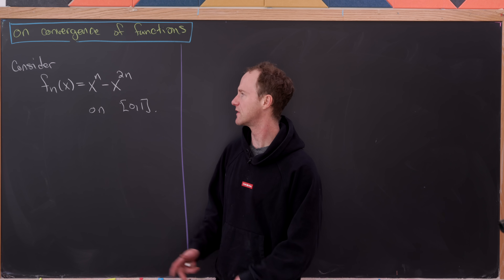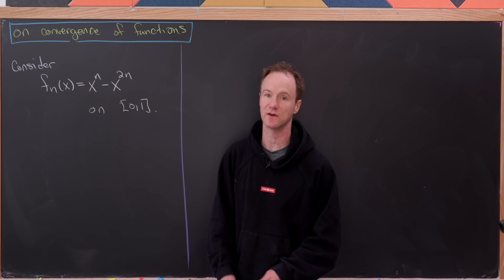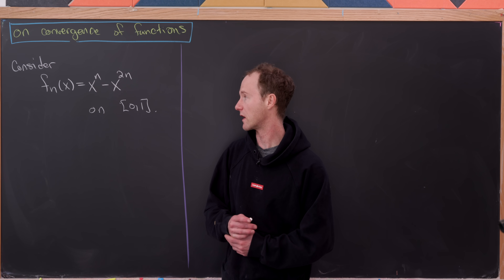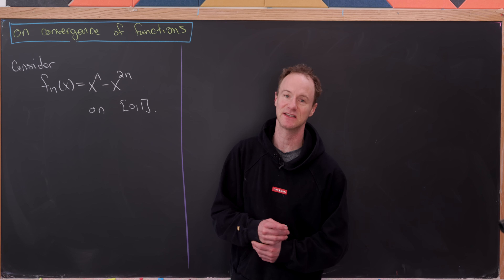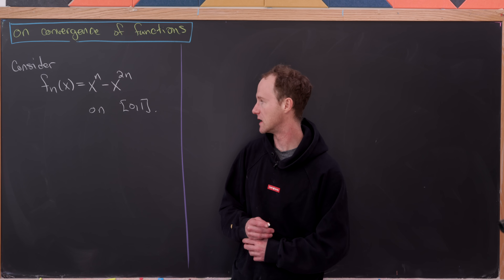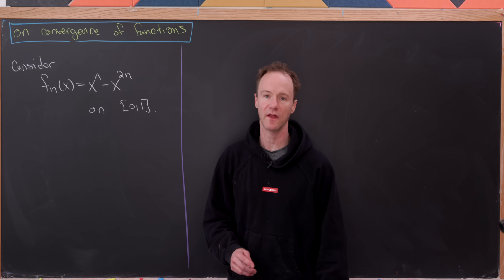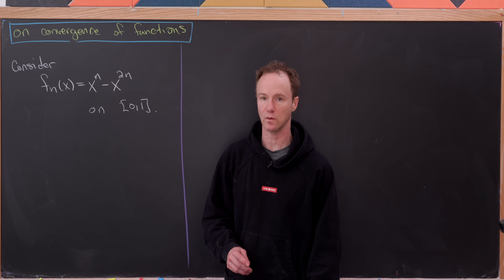Let's consider the sequence of functions f sub n, where f sub n of x is x to the n minus x to the 2n. We're going to consider this on the interval from 0 to 1.